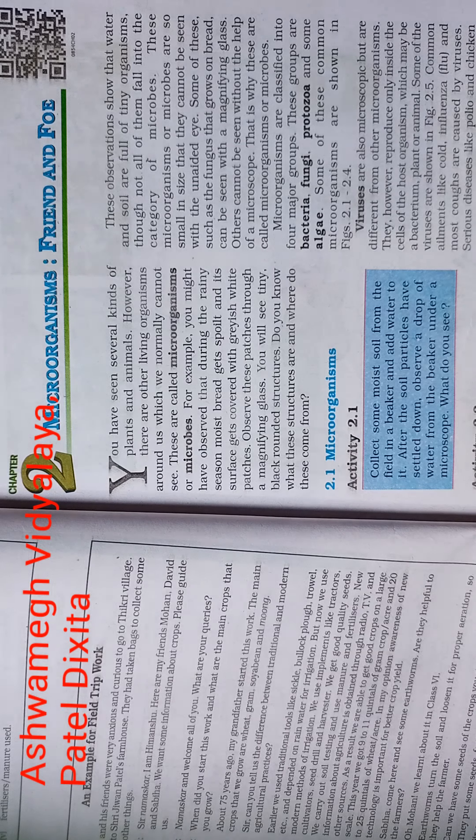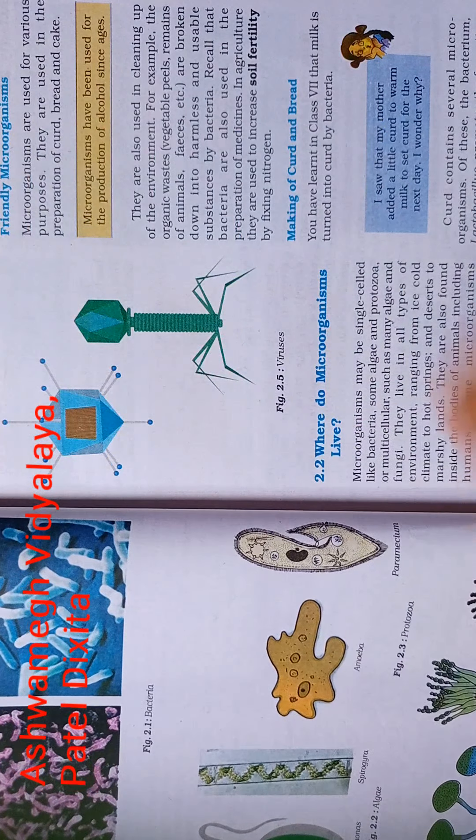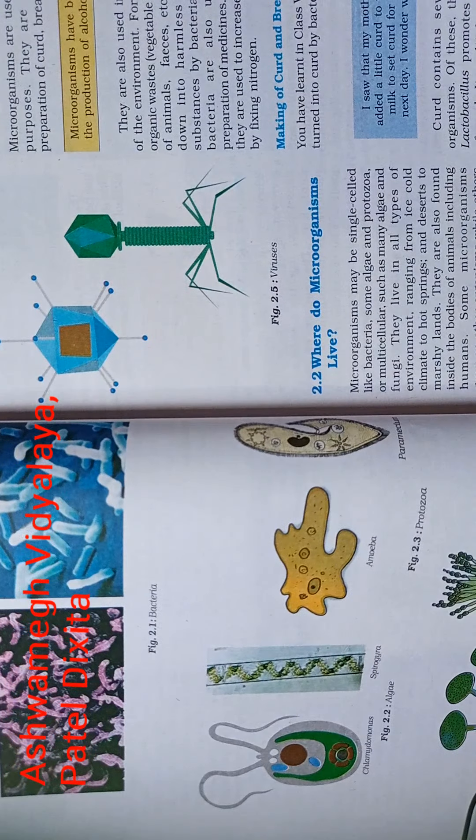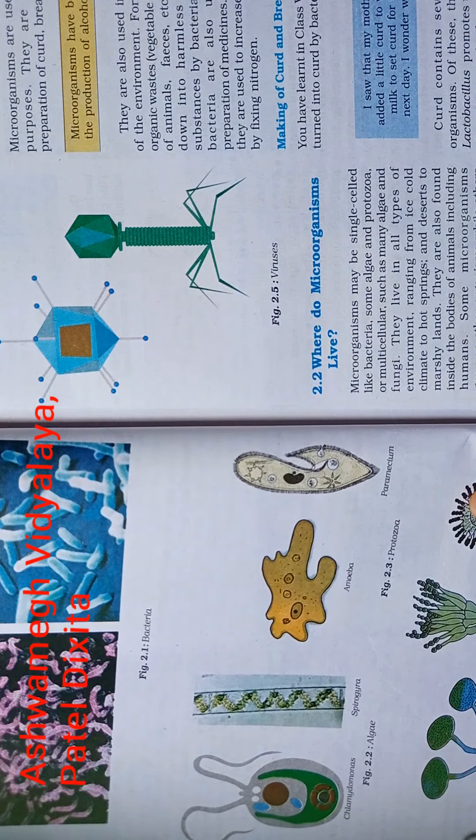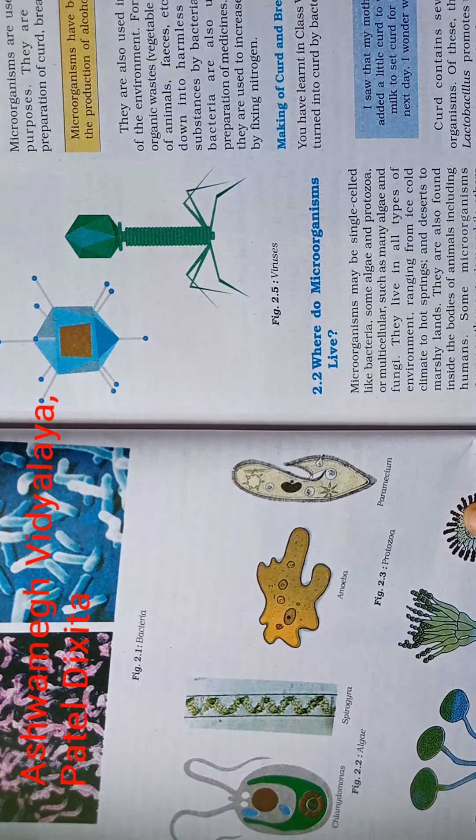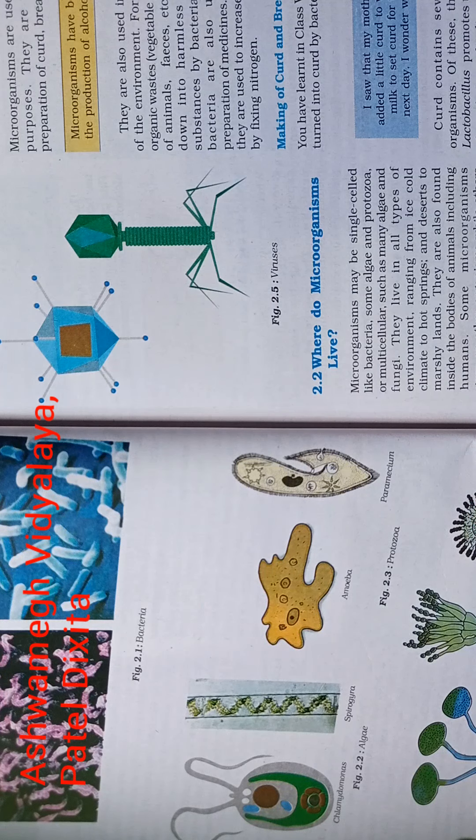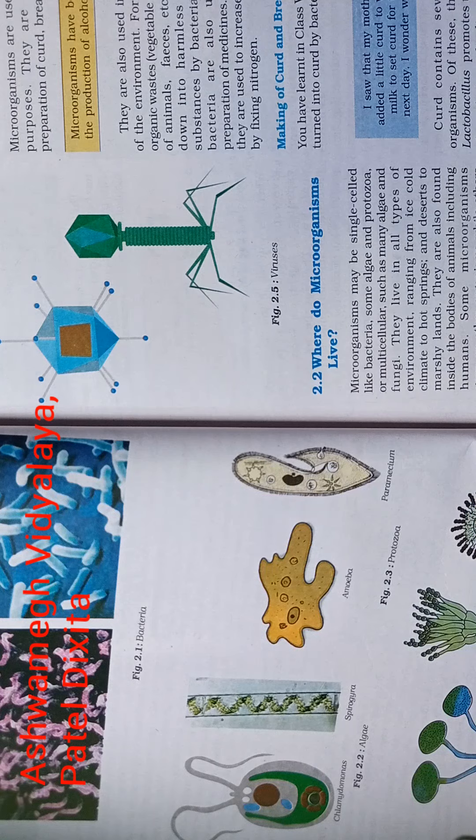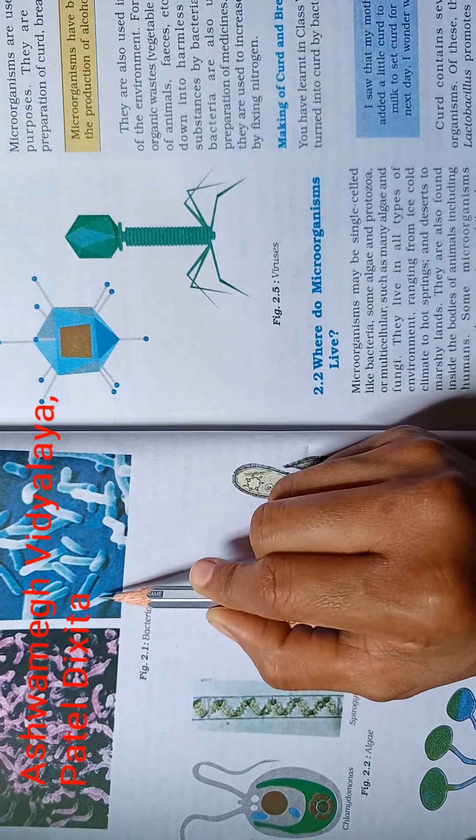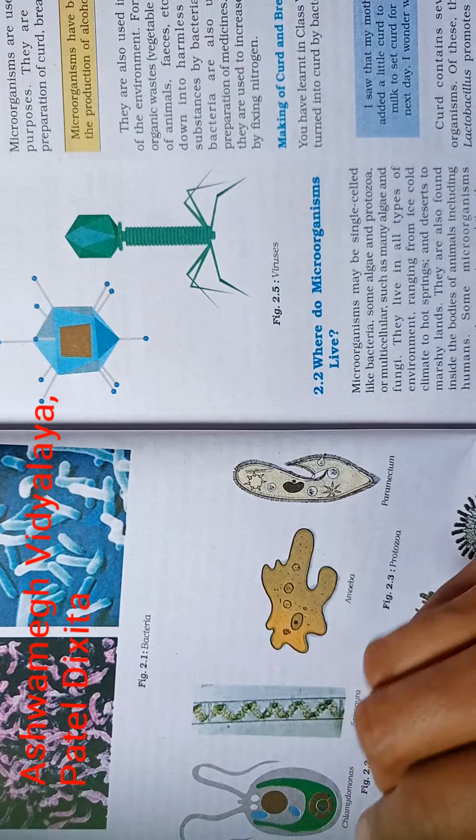Microorganisms have 5 types: Bacteria, Virus, Protozoa, Algae, and Fungi. Then we are discussing all microorganisms like bacteria which is single cell and unicellular, which is colonized and they are called colonies. They have different shapes: spherical means round, rod, and spiral. You can see here bacteria's different shapes.